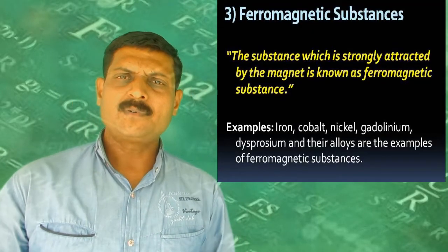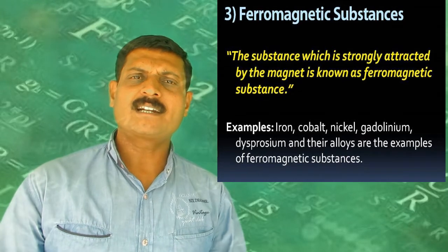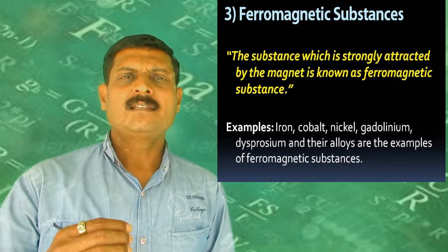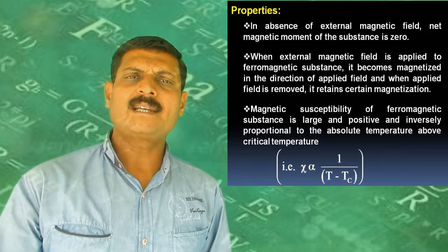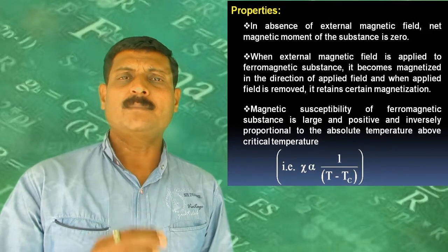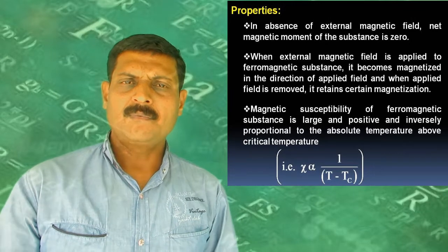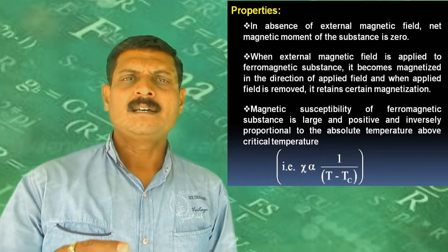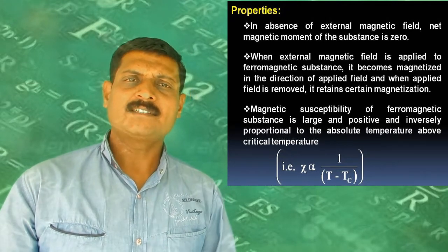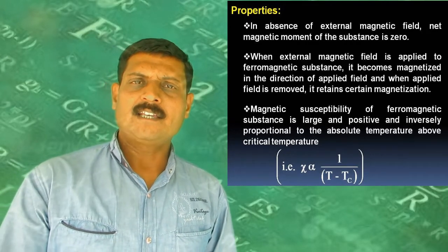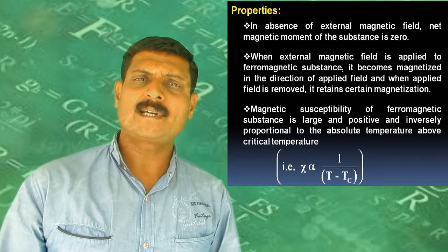Ferromagnetic materials are strongly attracted by the magnetic field. Their total magnetic moment (vector sum of spin and orbital magnetic moments) is non-zero and large. When placed in an external magnetic field, they are strongly magnetized in the direction of the applied field. Magnetic susceptibility is positive and large. Examples: iron (Fe), cobalt (Co), and nickel (Ni).